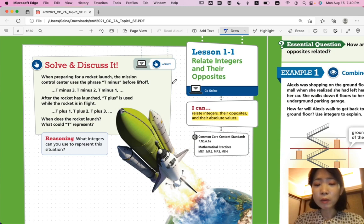So when the rocket is being launched, there is a countdown. And then after the rocket has launched, there's also a counting. T-plus-1, T-plus-2, T-plus-3. So when do you think the rocket is launched? At exactly zero, right? T-minus-0 and T-plus-0, so T. T is when the rocket is launched.